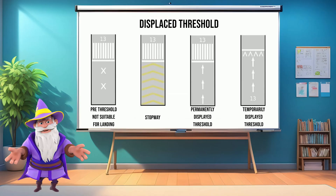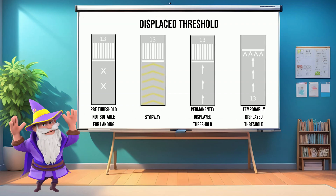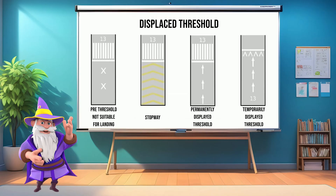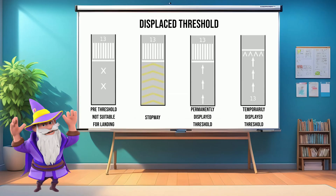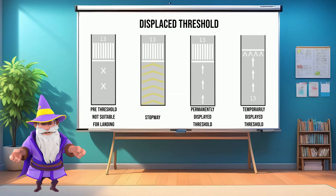And third, noise abatement. Some airports use displaced thresholds to move landing zones farther away from residential areas, reducing noise pollution.